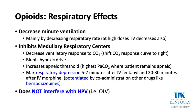Respiratory effects of opioids: minute ventilation goes down mainly because respiratory rate goes down; at very high doses, tidal volume also decreases. Opioids inhibit medullary respiratory centers, the ventilatory response to CO2 shifts to the right (more CO2 needed to stimulate breathing), and blunt hypoxic drive. The apneic threshold — the highest CO2 at which a patient remains apneic — actually increases. For example, after giving fentanyl to a patient breathing spontaneously through an LMA, end-tidal CO2 will rise, and they won't breathe again until CO2 builds back to their new apneic threshold.